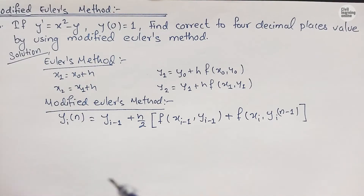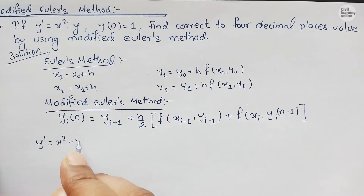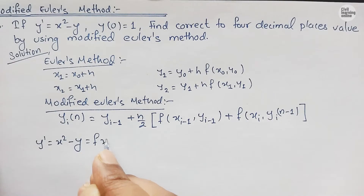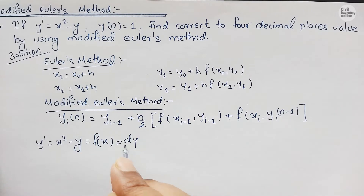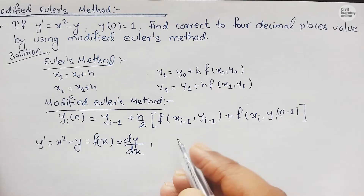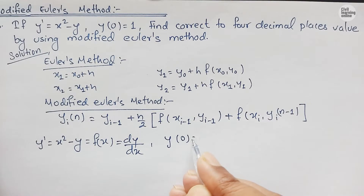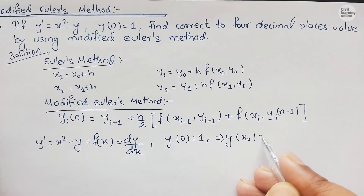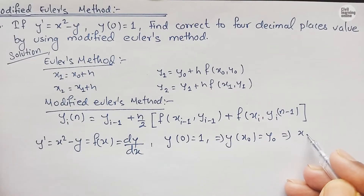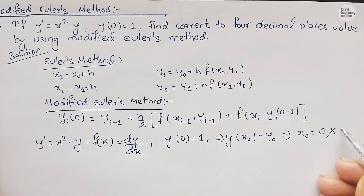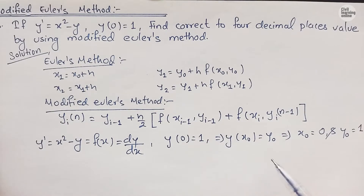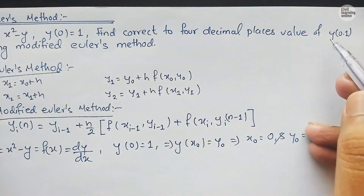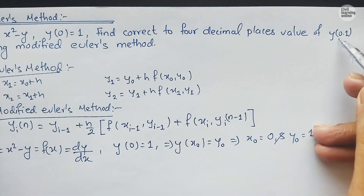We have y' = x² − y, which is in the form f(x) = dy/dx. Second, we have y(0) = 1, which implies y(x₀) = y₀, giving us x₀ = 0 and y₀ = 1.